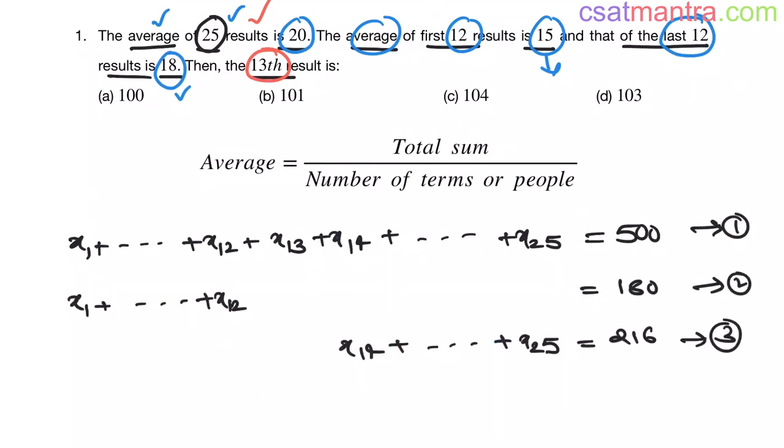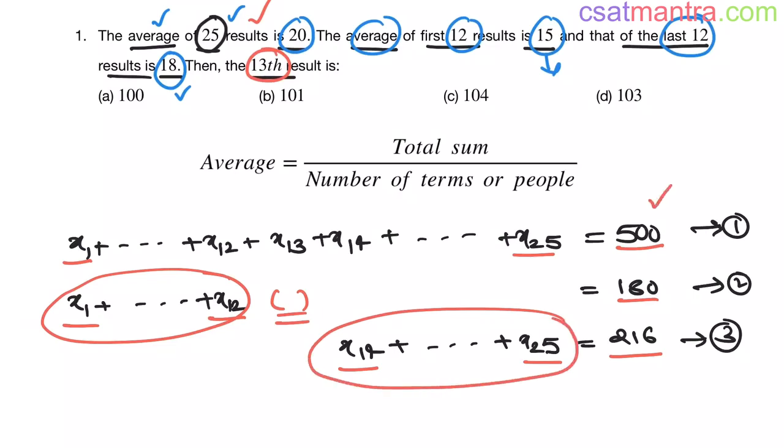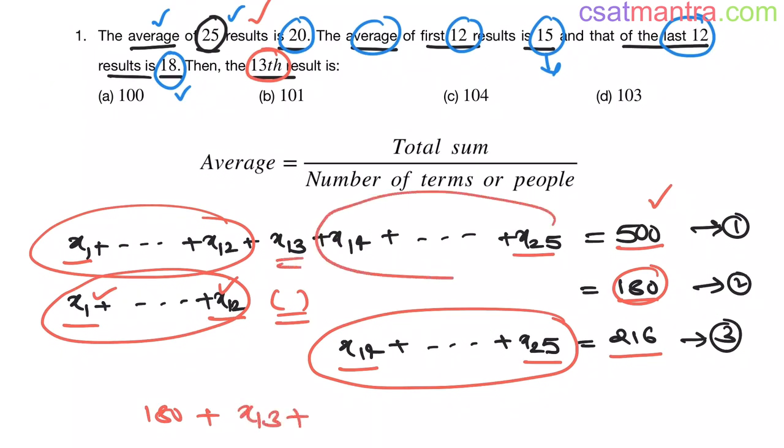Now we have 3 equations. x1 to x25 is 500. x1 to x12 is 180. x14 to x25 that is 216. If you observe x13 is missing here. That's why this is a missing number concept problem. Now just substitute these values x1 to x12 and x14 to x25 in equation 1. So x1 to x12, this value is 180 plus x13, x14 to x25 that is 216. This equals 500.